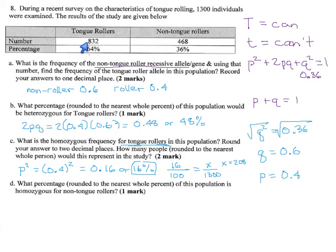So out of these tongue rollers up here, the 832, 208 of them are big T, big T, and all the rest, which I guess would be 624, would be heterozygous, meaning they can roll their tongue, but they aren't full dominant. They're one dominant, one recessive.